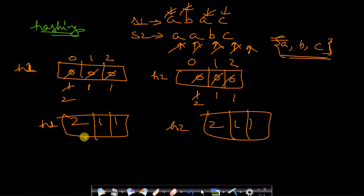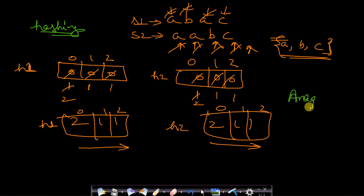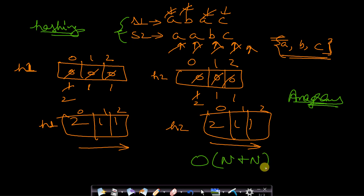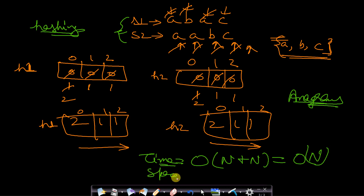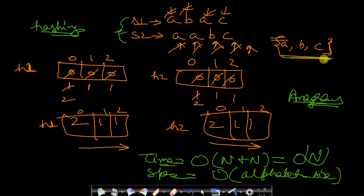We then compare both hashes element by element — index 0 of H1 must equal index 0 of H2, and so on. If all values match, the strings are anagrams. The time complexity is O(length of S1 + length of S2), and since both strings have equal length, this is O(n). The space complexity is O(alphabet size) — here 3, but for English it would be 26, or 256 for ASCII.